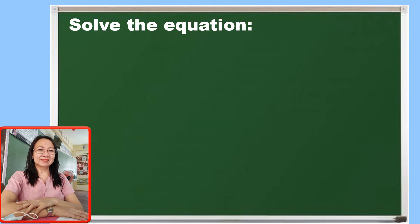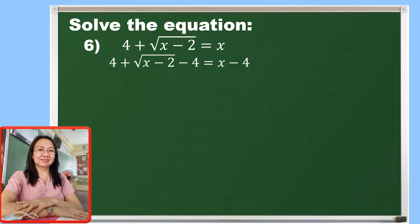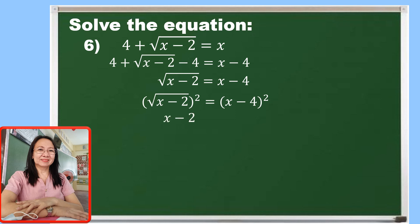Now let me present another example. For example number 6, the given is 4 plus the square root of x minus 2 is equal to x. So let us leave the radical on the left side. By adding both sides by negative 4, we eliminate 4 on the left side. So we have the square root of x minus 2 is equal to x minus 4. This time, let us square both sides. The square root of x minus 2 squared is x minus 2, and x minus 4 squared is x squared minus 8x plus 16.